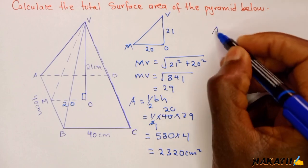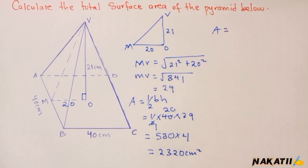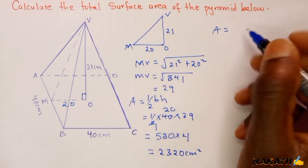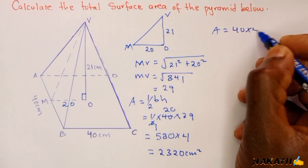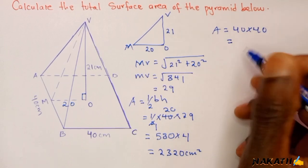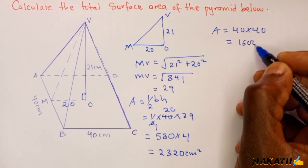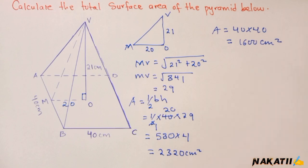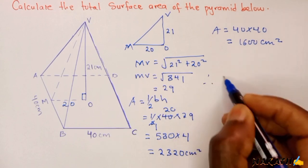We now get the area of the square base. The square base is simply 40 times 40, and then we say it is 1600 centimeters squared.